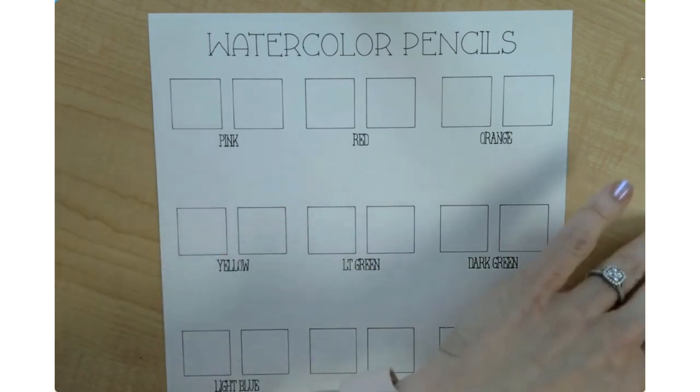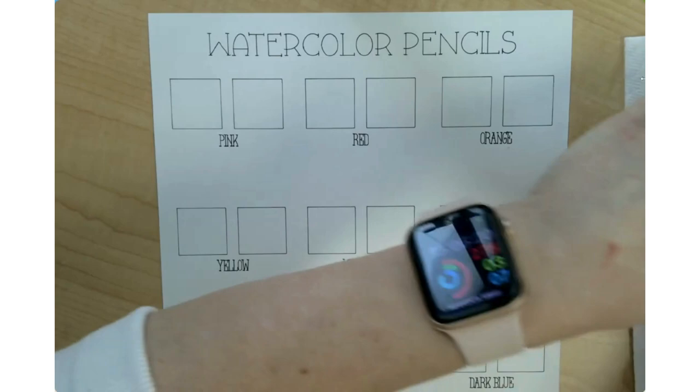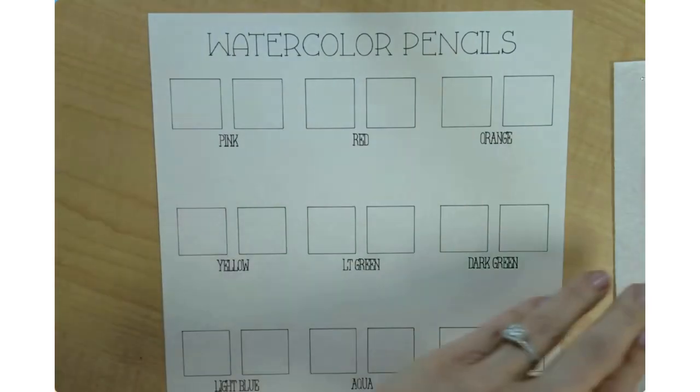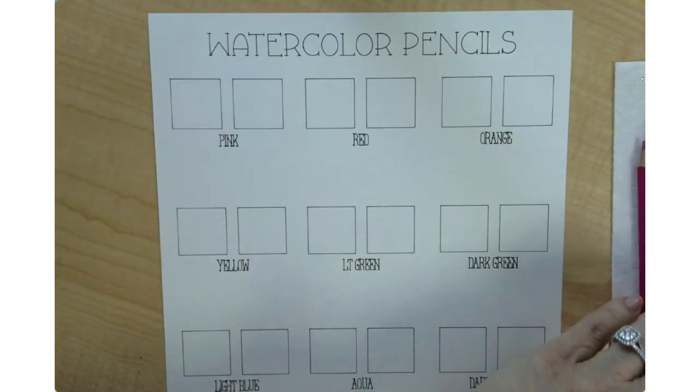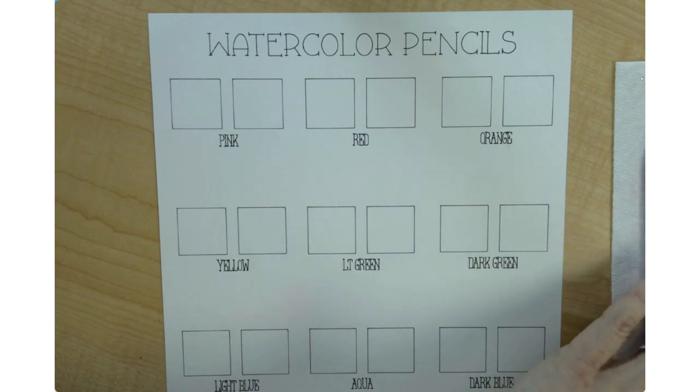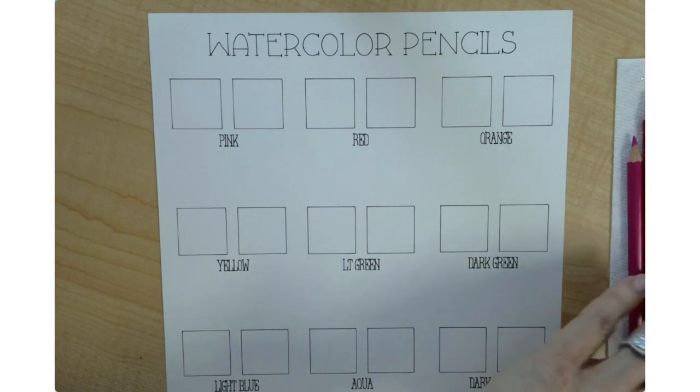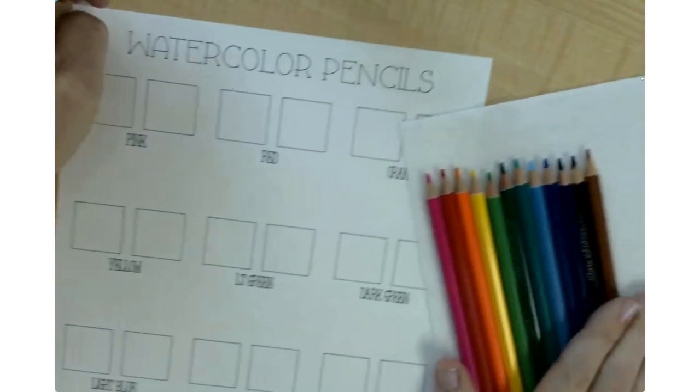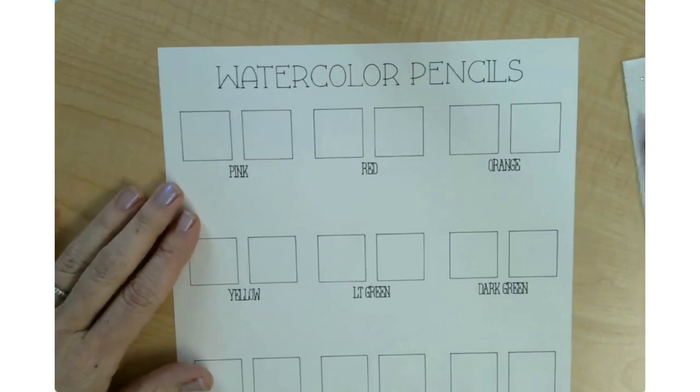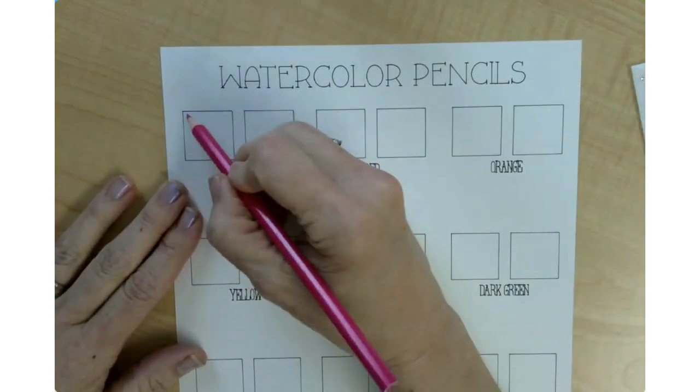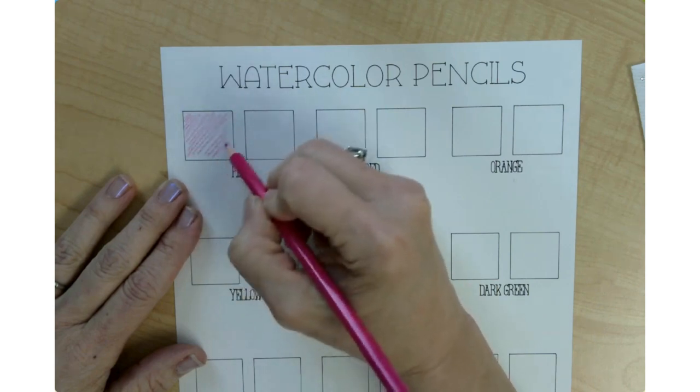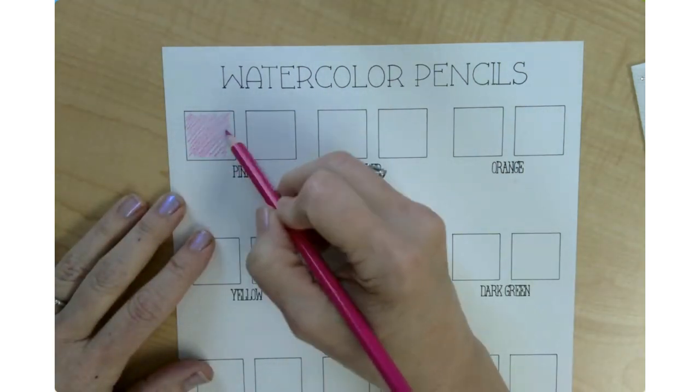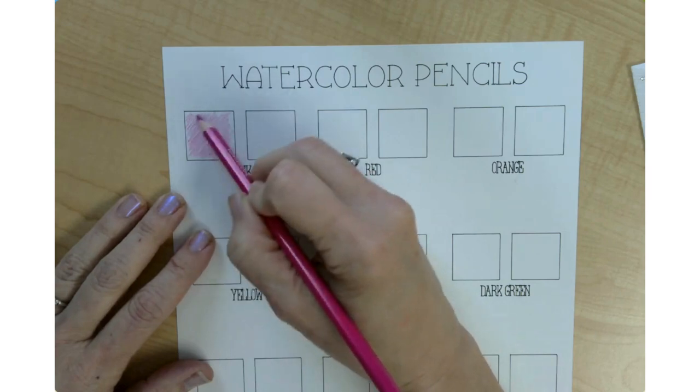I did all of this in Cricut Design Space and made my own little page here, like a little swatch page. Really, all I'm going to do is take all of my colors here and get them back in order. You could do whatever colors you want, whatever order you want. Literally all I'm going to do is go like this - this is what it looks like without the water.